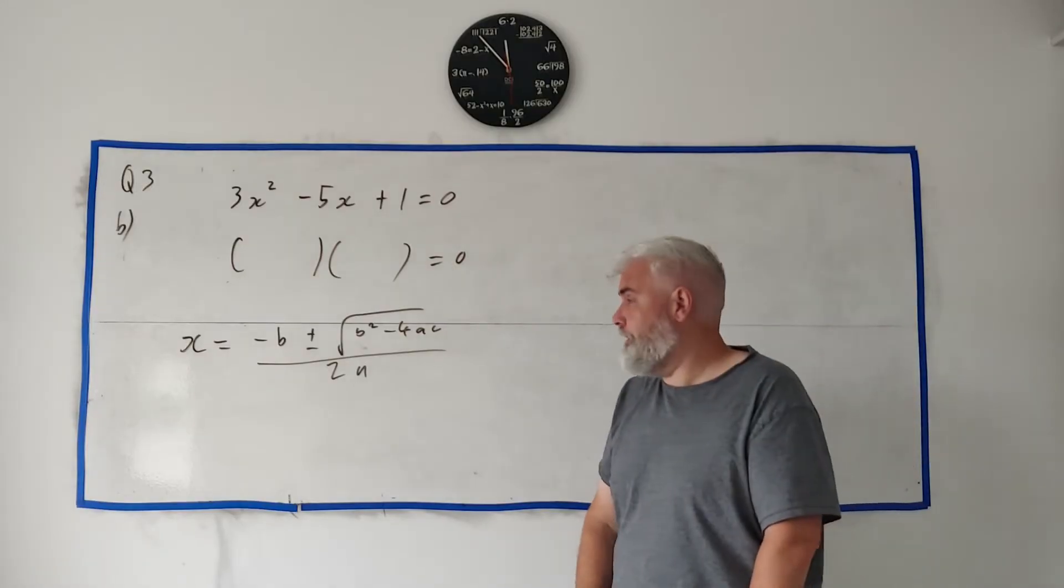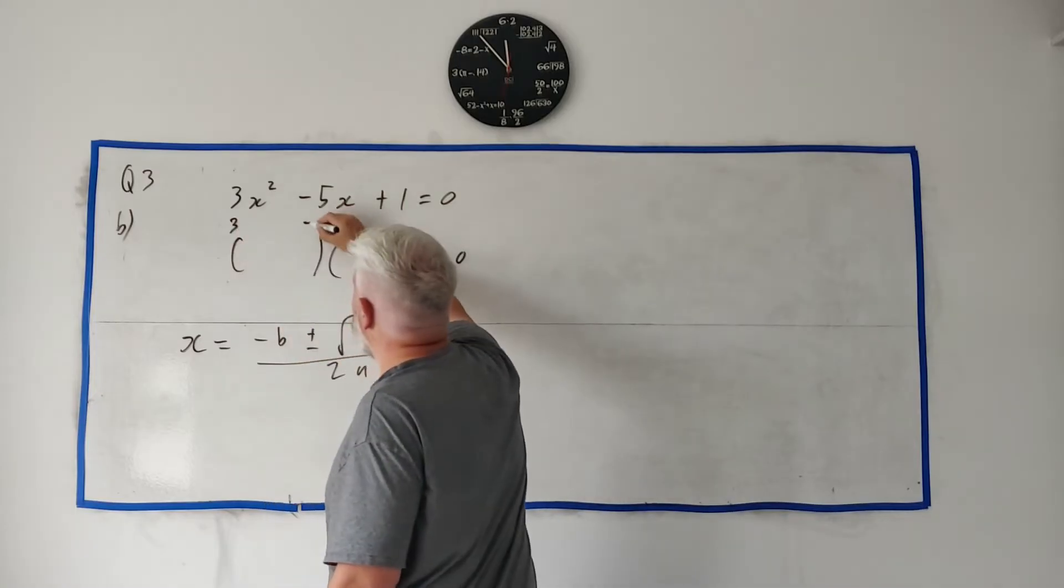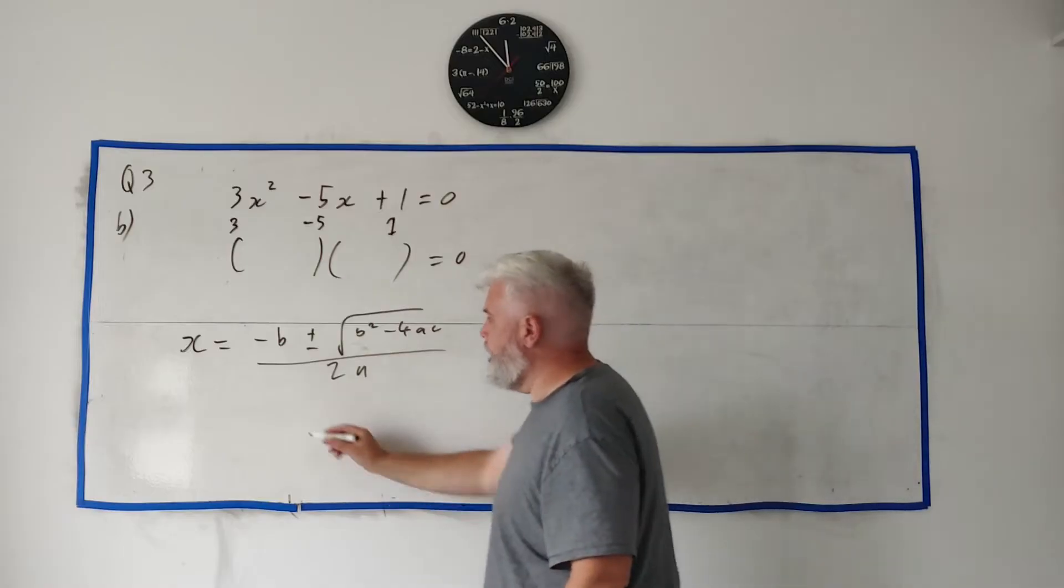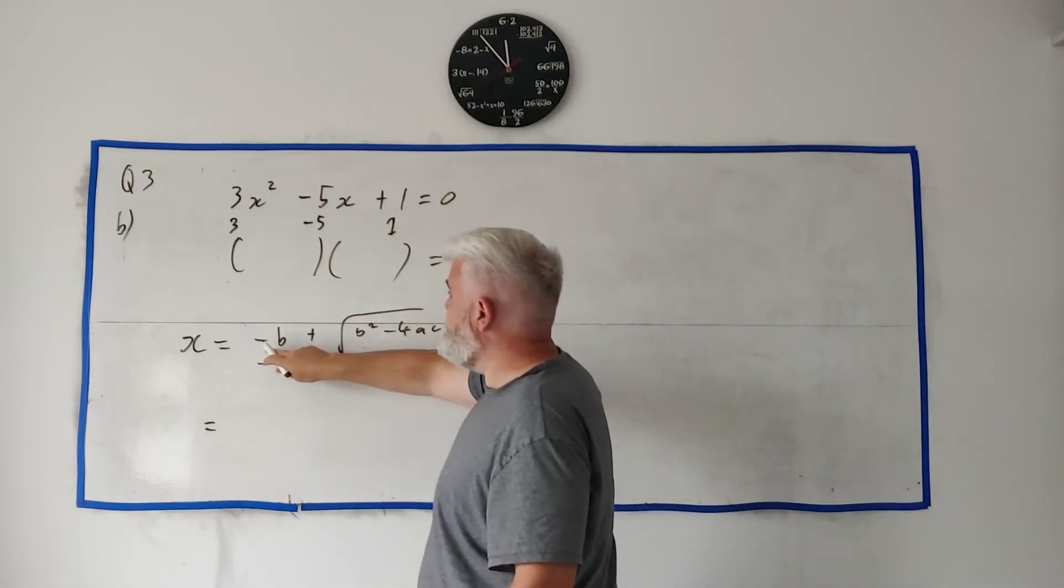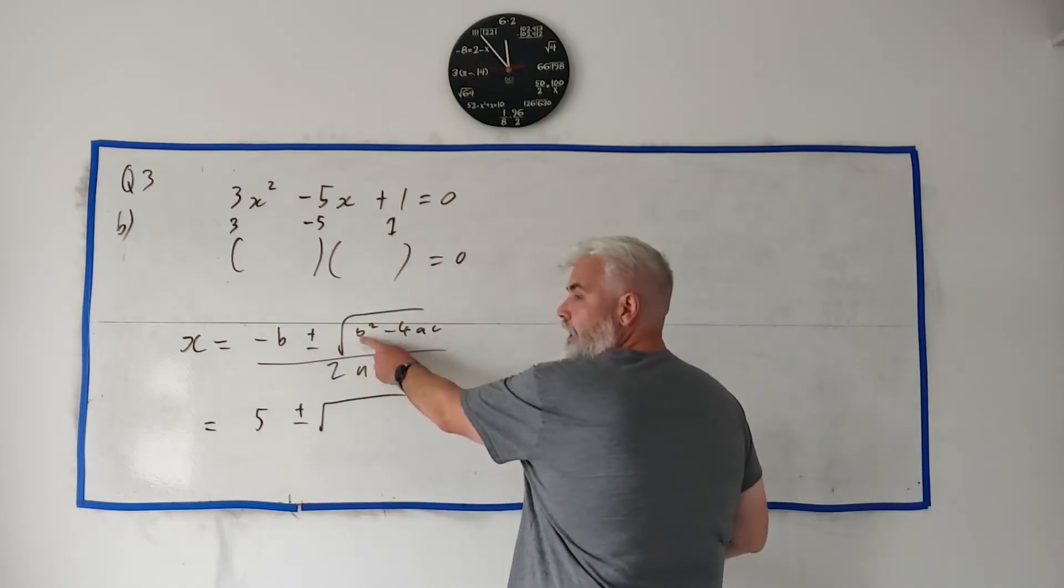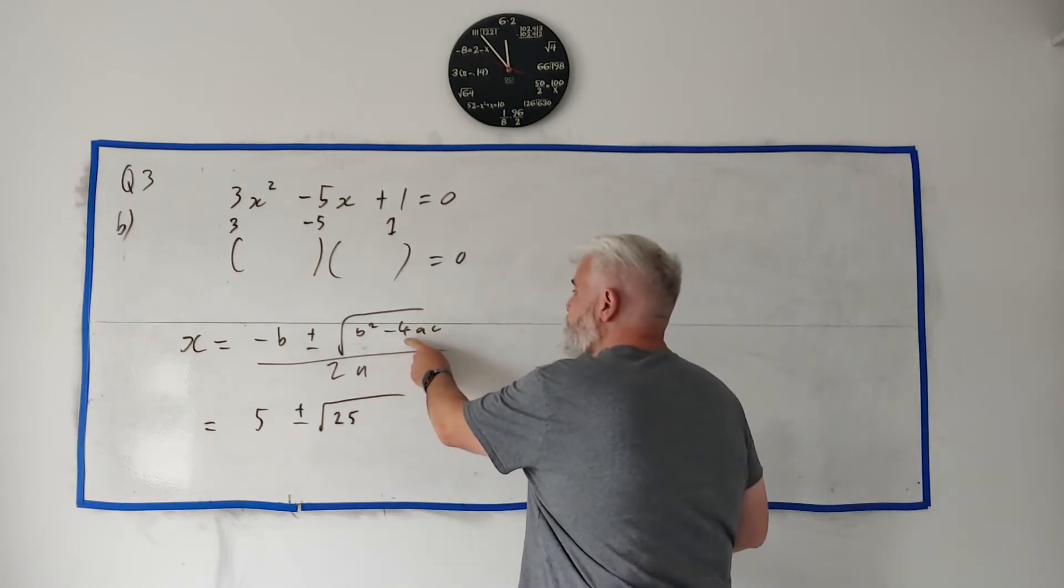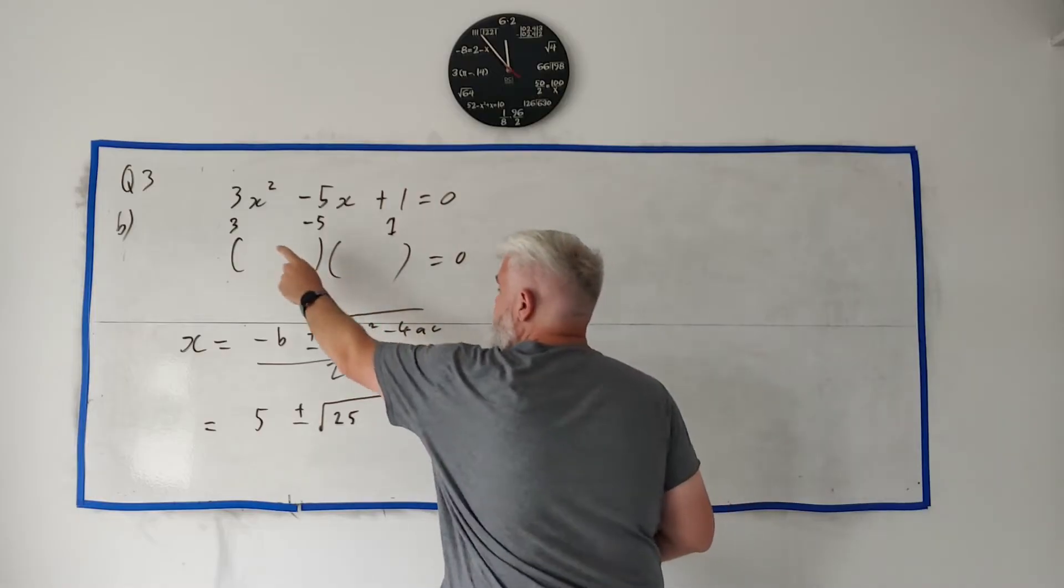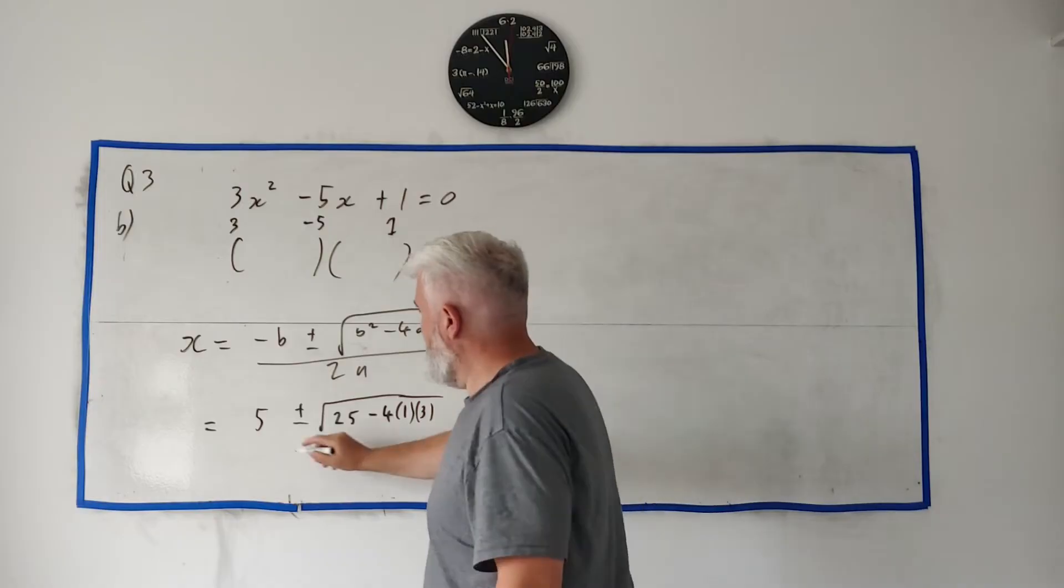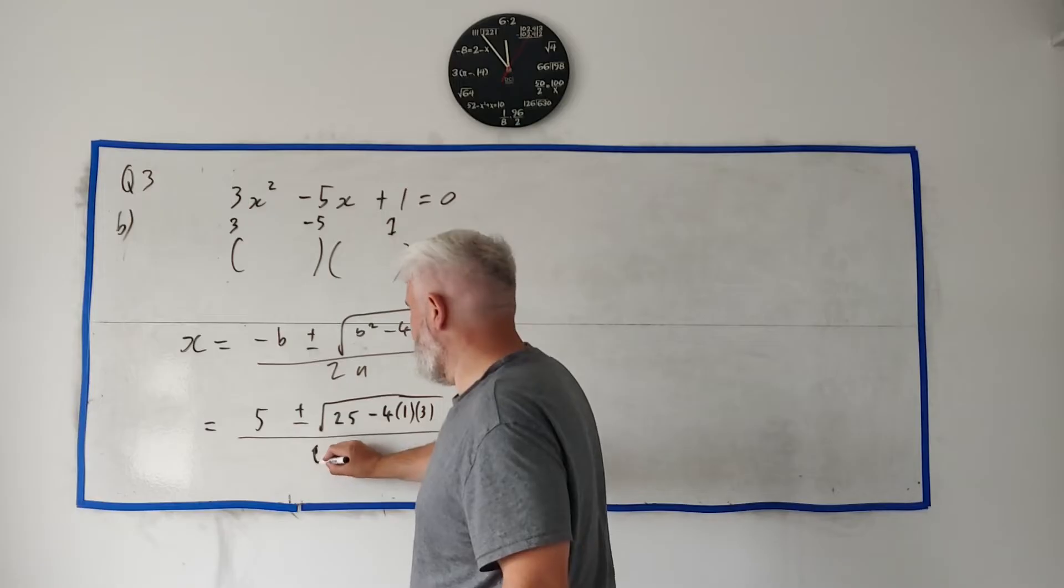X is going to equal minus B plus or minus the square root of B squared minus 4AC all over 2A. It's the minus B formula. And it works for every quadratic. It takes a little longer than factorising but it always works. So I highly recommend students who have trouble with quadratics, just do 20 of these questions, 50 examples. You'll get there. You'll be an expert by the end of it. So what's A, B and C? Well A is 3, B is minus 5 and C is 1. And we just fill them in.